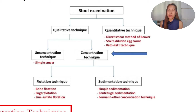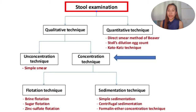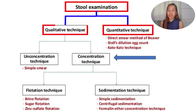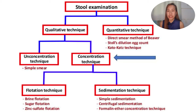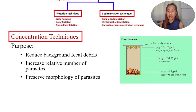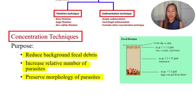For stool examination, we conduct qualitative and quantitative techniques. Quantitative techniques include the direct smear method, Stoll's dilution egg count, and Kato-Katz technique. Qualitative techniques include unconcentrated (simple smear) and concentration techniques. Concentration techniques include flotation and sedimentation, with four purposes: to reduce background fecal debris, to increase the relative number of parasites, and to preserve parasite morphology. Special stains include methenamine silver, Giemsa, and periodic acid-Schiff for Pneumocystis jirovecii, and modified acid-fast with fluorescent microscopy for Cryptosporidium parvum.